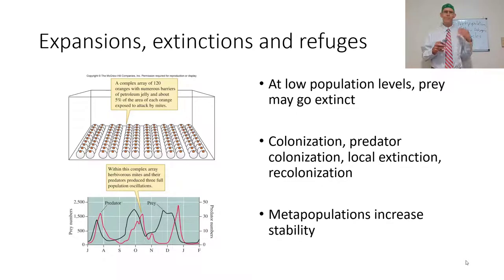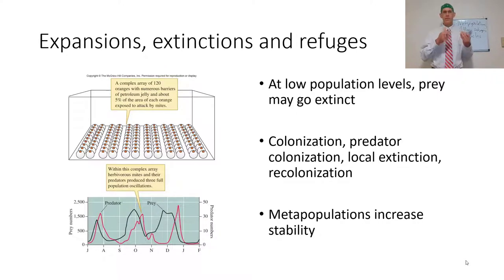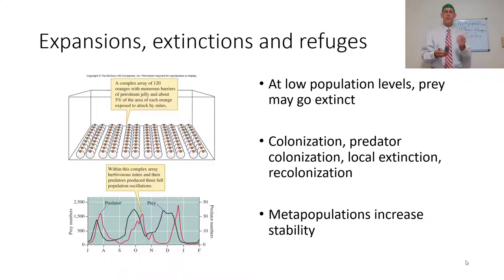We'll discuss Lotka-Volterra at a different lecture. The idea is that with Lotka-Volterra predator-prey cycles, eventually one of them will go extinct — they're oscillating, and at some point one is going to oscillate out. When that happens, there needs to be an ability to recolonize from somewhere else. That's where metapopulations can actually increase the stability of an organism overall. If it was just one orange, eventually both would go extinct. But if it's many oranges, sometimes a population can go extinct in one spot and still survive from another.